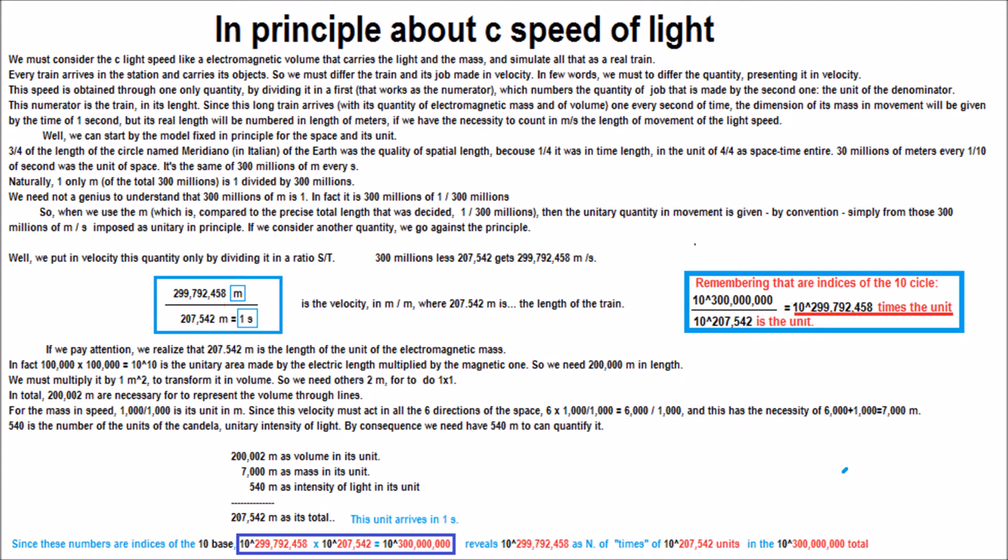We need not a genius to understand that 300,000,000 of m is 1, in fact it is 300,000,000 of 1,300,000,000.